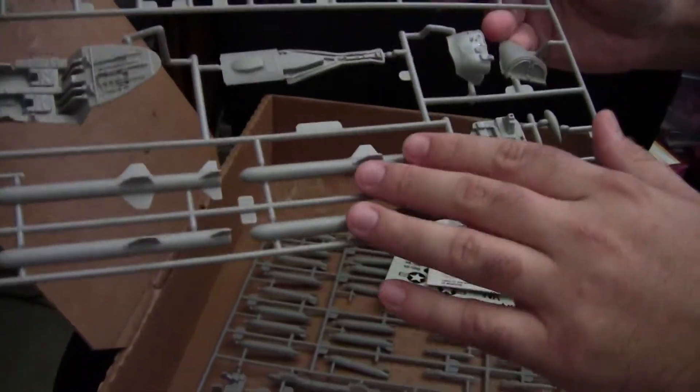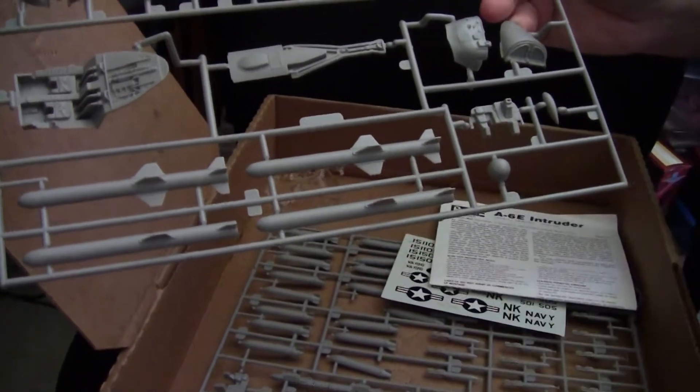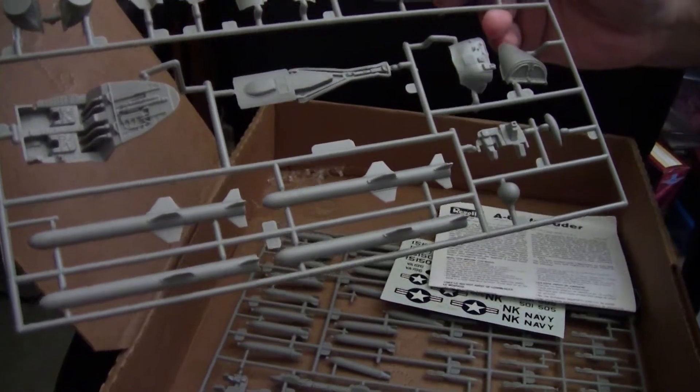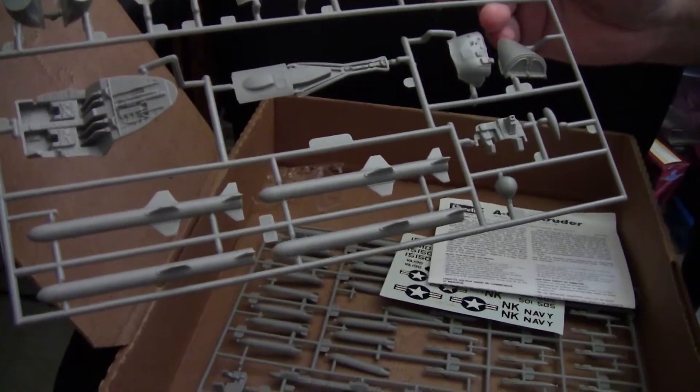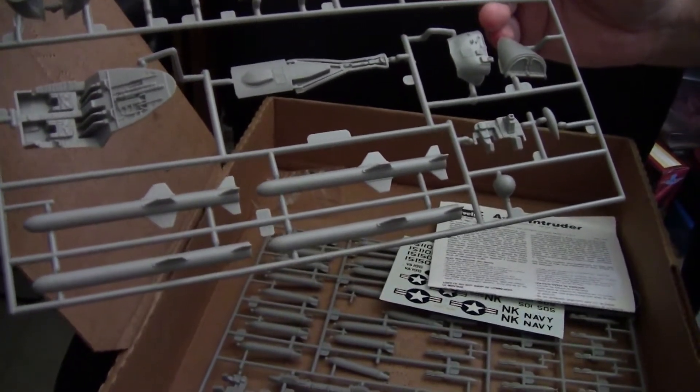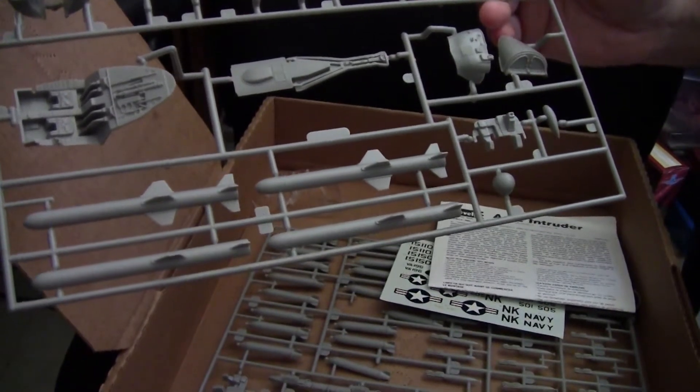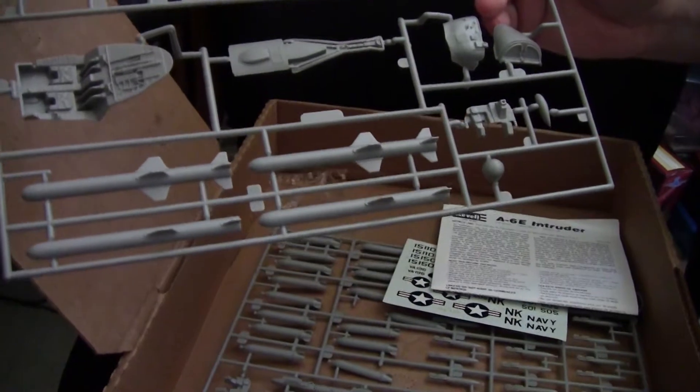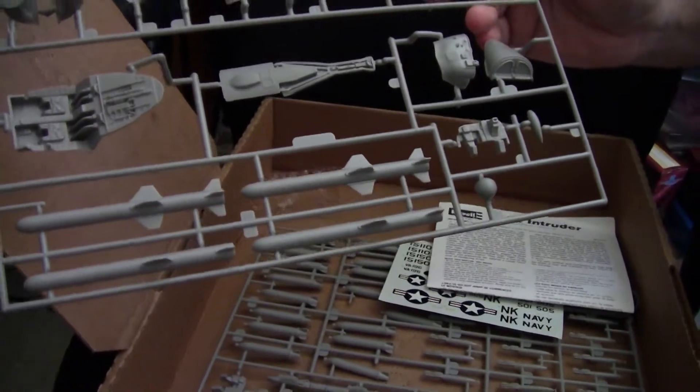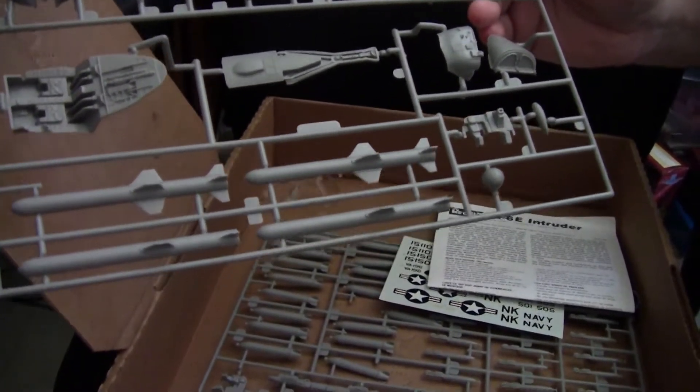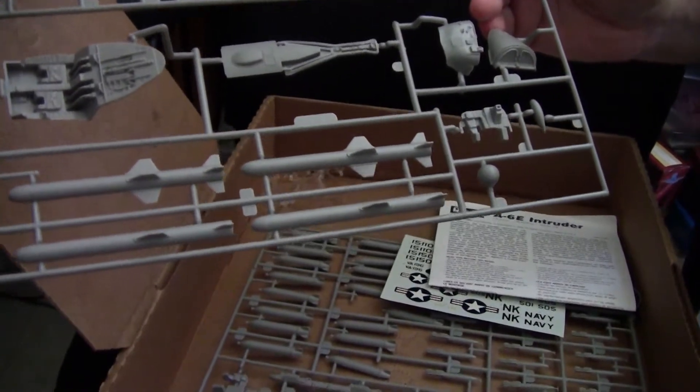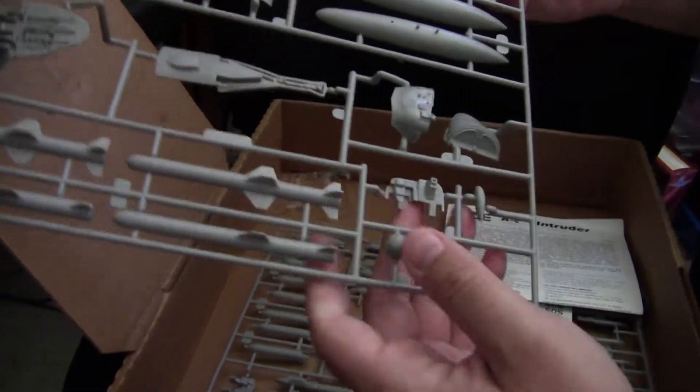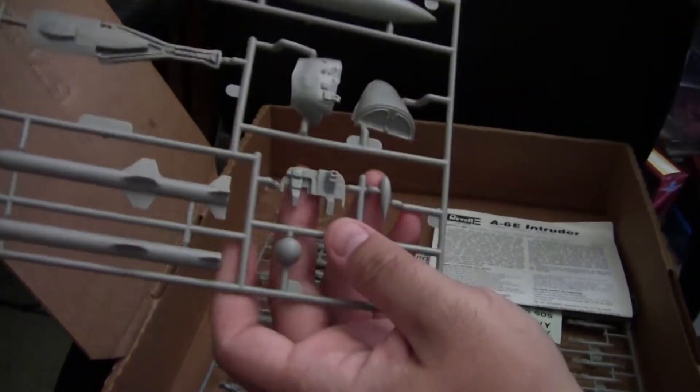We also have, strangely enough, a large anti-ship missile, blanking on which particular missile it is offhand. I do find it odd that it's included on this kit, just because you don't typically see the A-6 carrying anti-ship missiles. You typically see it in ground attack role. So it's an interesting inclusion, but just something I thought I'd point out.